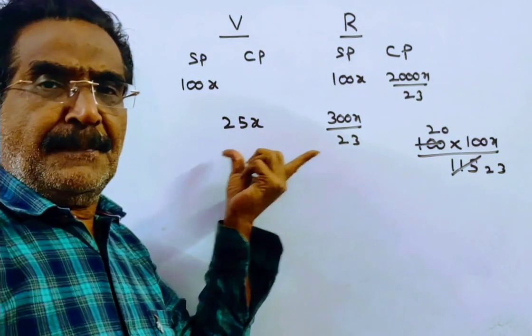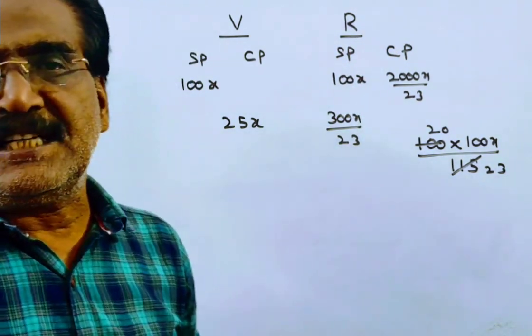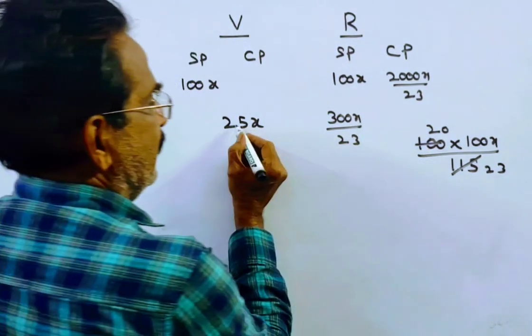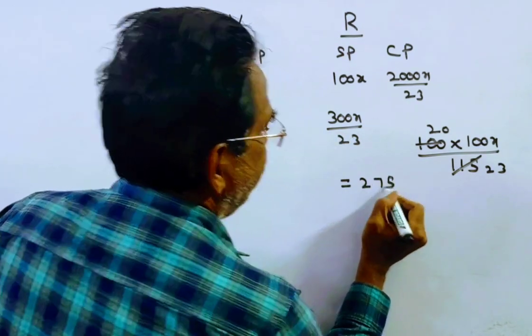These are the profits of Vinith and Roshan. Now it is given that the difference between the profits is 275, so 25x minus 300x over 23 equals 275.